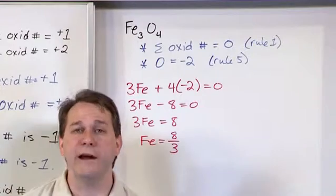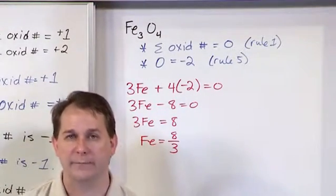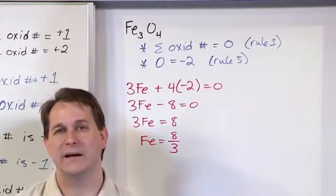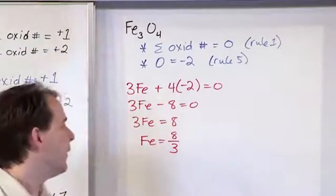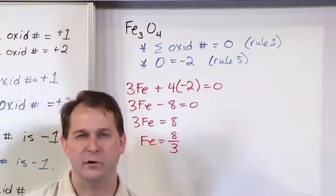And if it was also 8 over 3, then we would say there's no change in oxidation number, so there's no oxidation or reduction happening to iron. And if it went up or down, that would tell us if iron was being oxidized or reduced. But the fact that you get a fraction shouldn't scare you by itself. Just make sure that your math is correct.